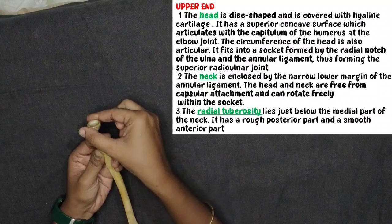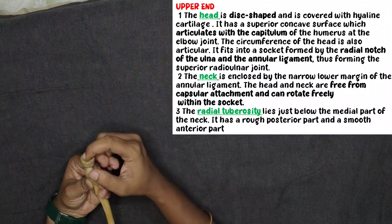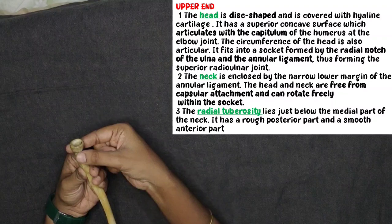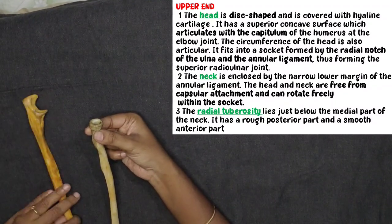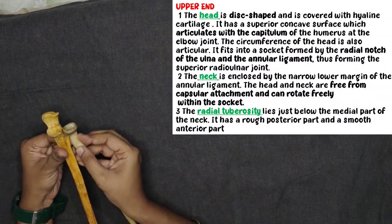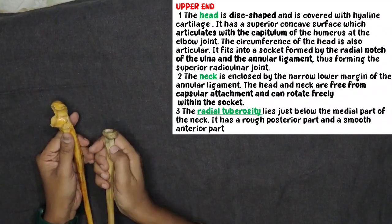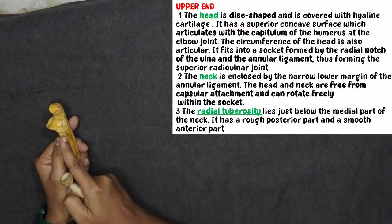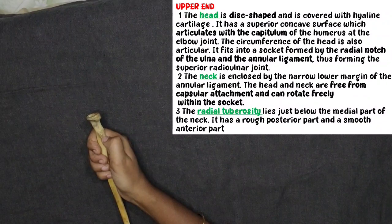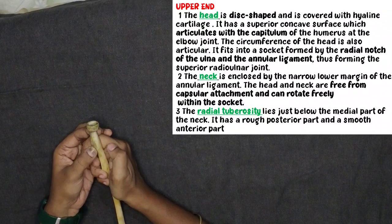To repeat the upper end features: the head is rounded and disc-shaped, with a concavity on top articulating with the capitulum of the humerus. The neck is narrow and connected by the annular ligament. There is also a radial notch. The radial tuberosity has a smooth anterior part and a rough posterior part.